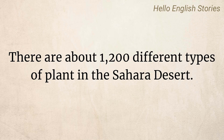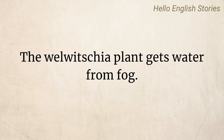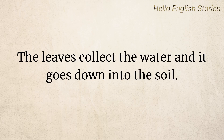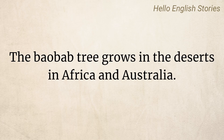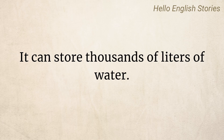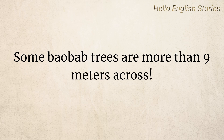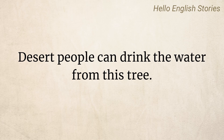There are about 1,200 different types of plant in the Sahara Desert. The Welwitschia plant gets water from fog. The leaves collect the water, and it goes down into the soil. Then the plant takes up the water with its roots. The Baobab tree grows in the deserts in Africa and Australia. It can store thousands of liters of water. Some Baobab trees are more than 9 meters across. Desert people can drink the water from this tree.